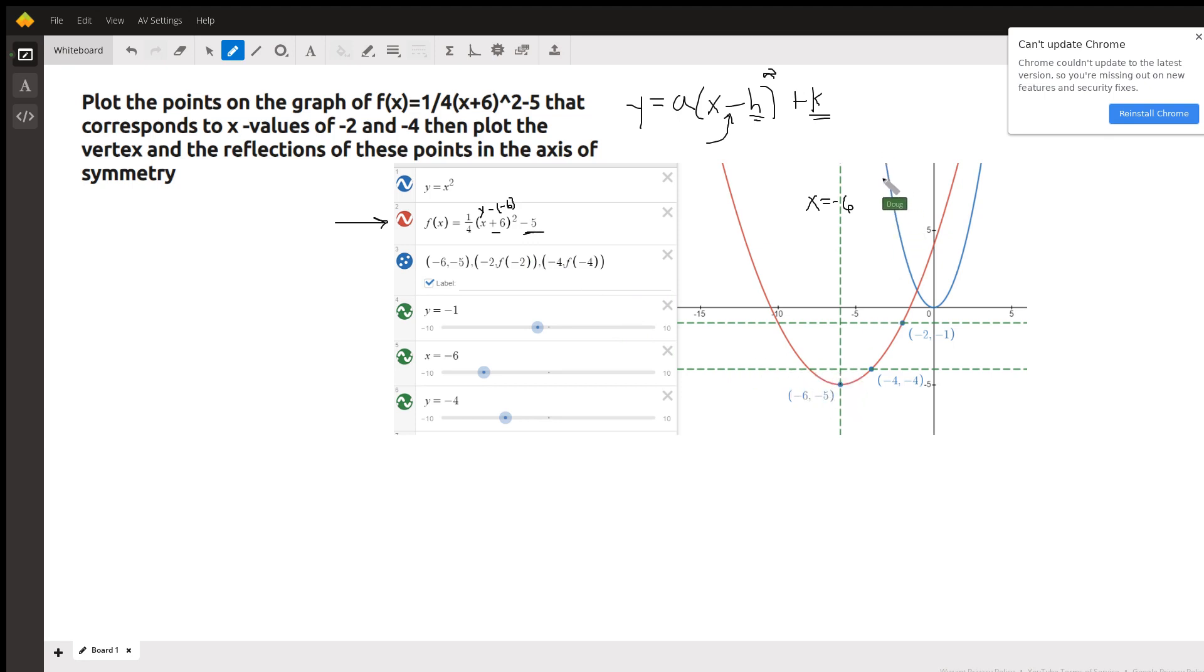By the way, I've graphed the parent function y equals x squared over here with its vertex at the origin. And I've plotted the vertex right here.